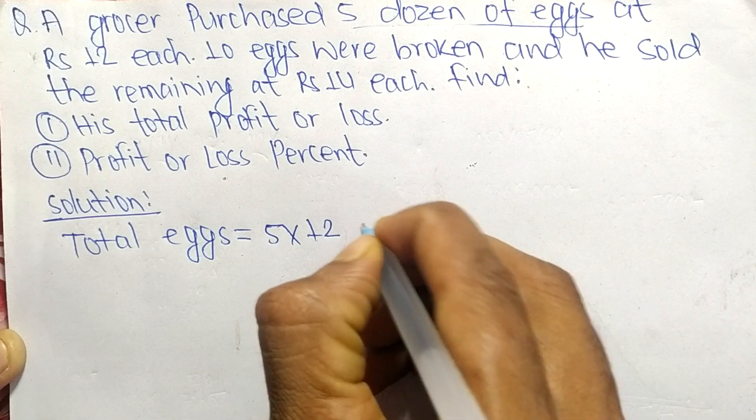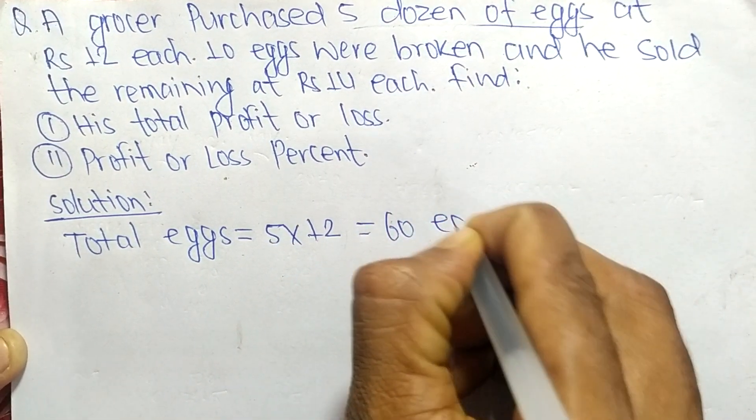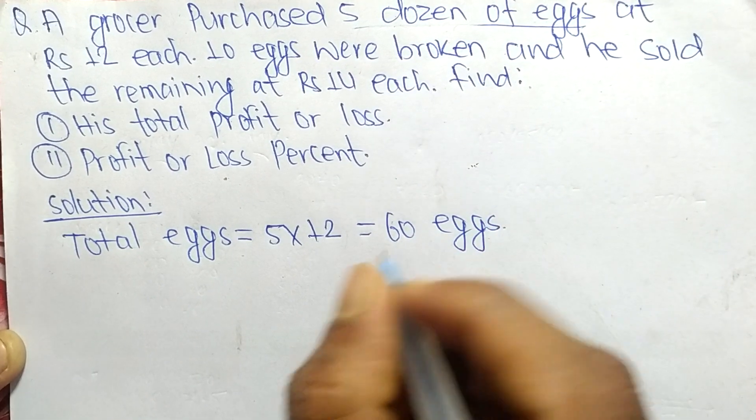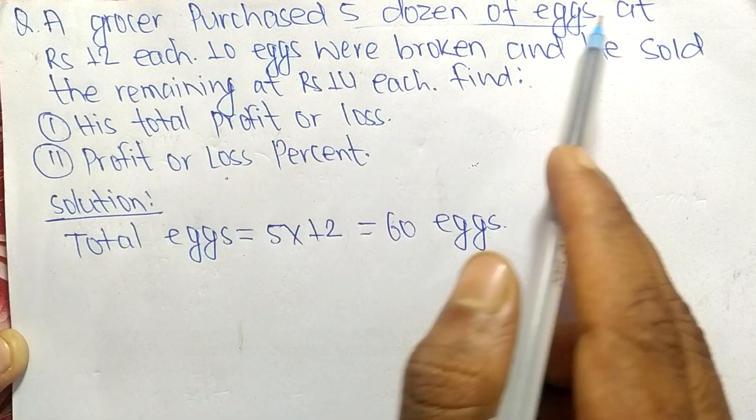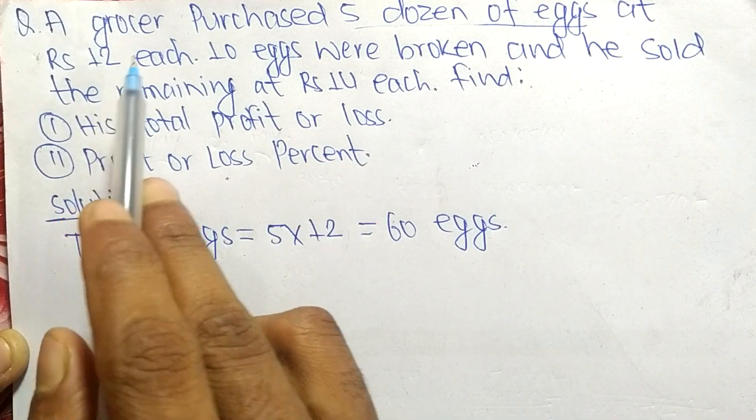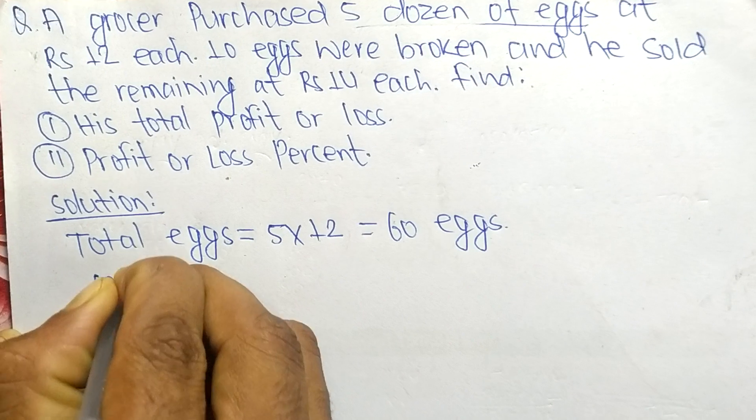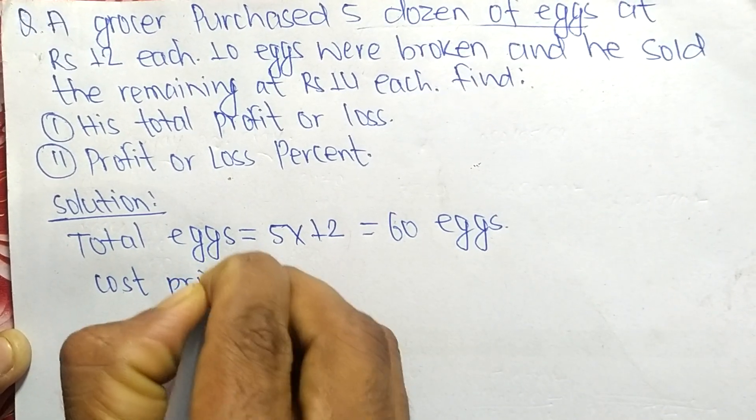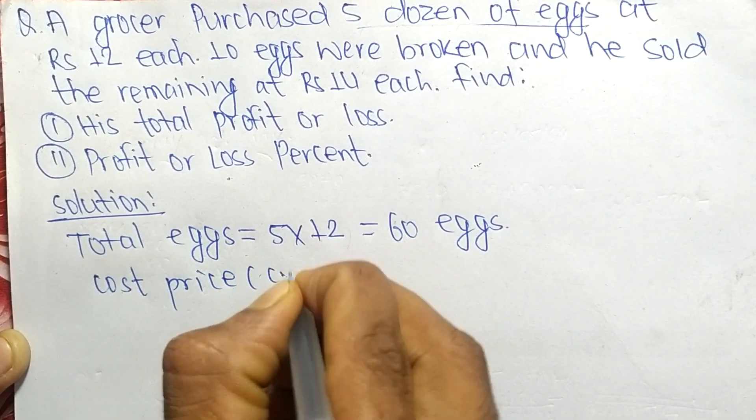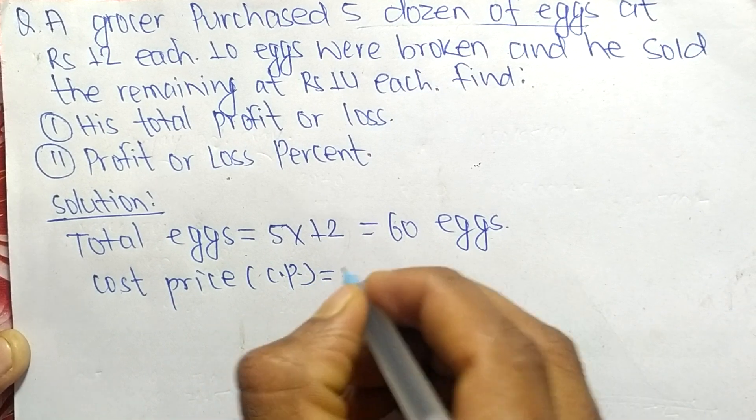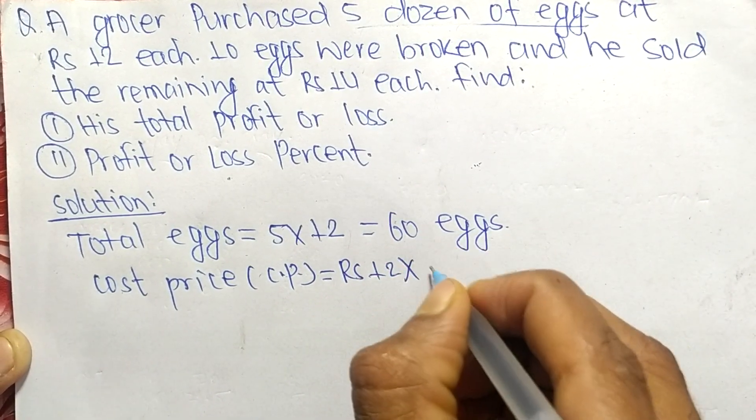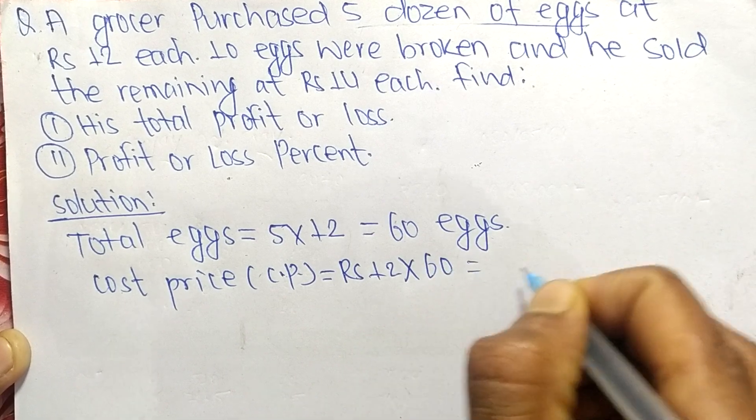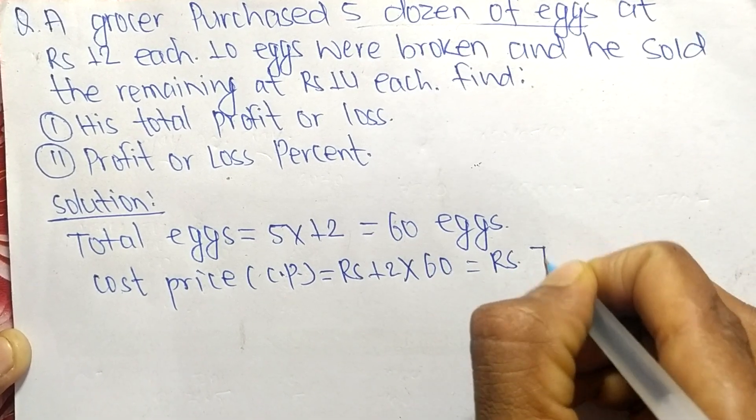At the rate of Rs 12 each, the cost price (CP) = Rs 12 × 60 eggs = Rs 720. This is the cost price of all the eggs.